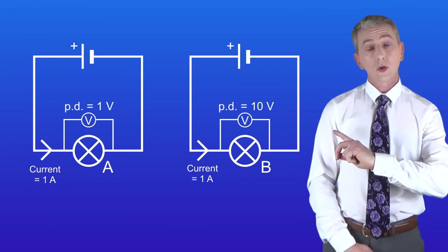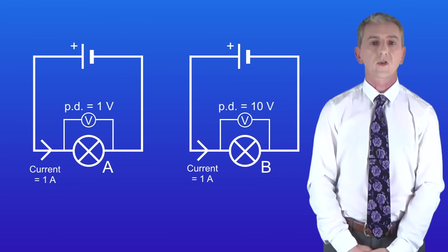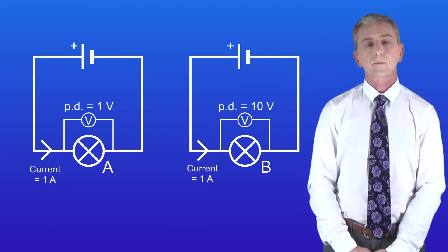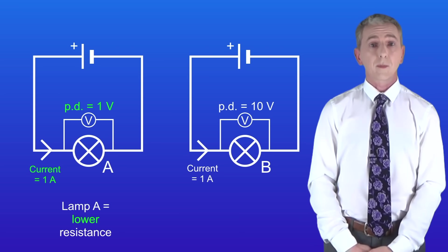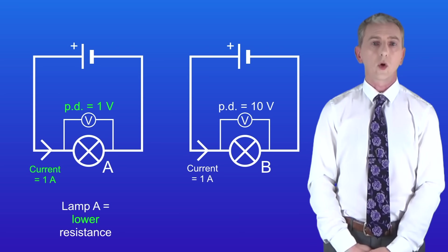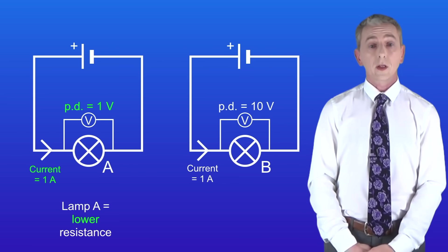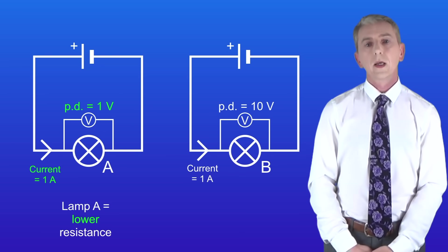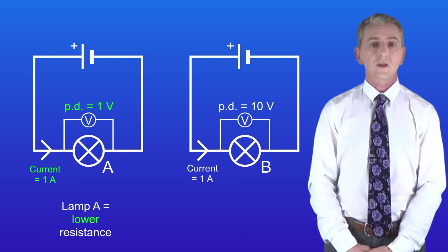I'm showing you here two circuits containing different lamps. A current of 1 ampere is moving through both circuits. In lamp A, the current is being driven by a potential difference of only 1 volt. This tells us that only a small amount of energy is required to drive the current through this lamp. So lamp A is a low resistance lamp.